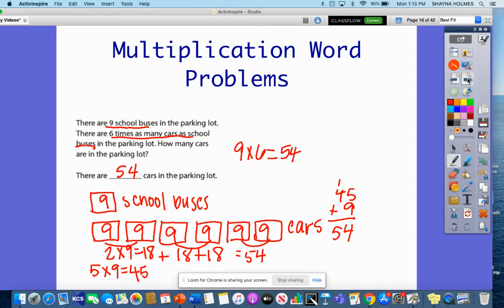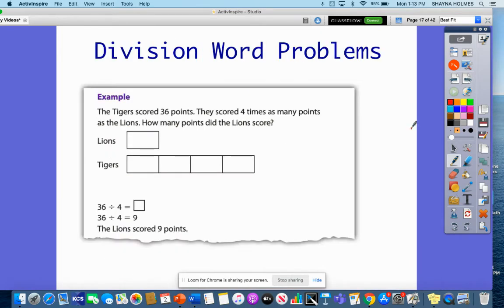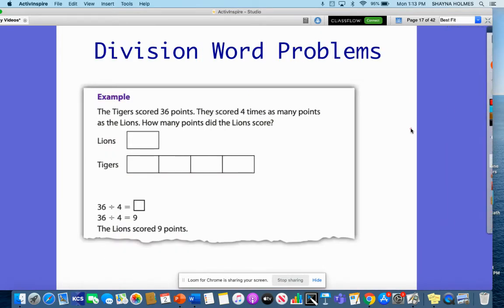Let's look at another example problem. Now, this one is a division word problem. But we're going to go through that same process. We're going to read our problem and then we're going to do those look-fors and see what are some keywords or phrases that let us know that we are dividing. So this problem says the Tigers scored 36 points. They scored four times as many points as the Lions. How many points did the Lions score?